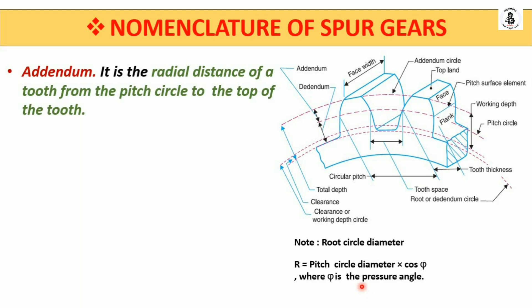One more important terminology is addendum, which is also related to the pitch circle. As per the definition, it is the radial distance of a tooth from the pitch circle to the top of the tooth. So from pitch circle to the top of the tooth — that distance is my addendum.